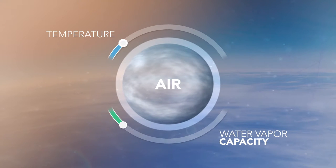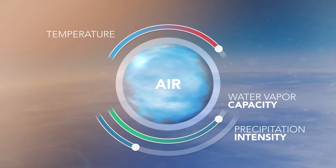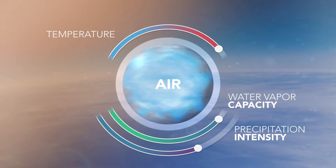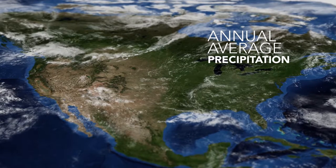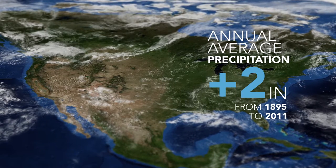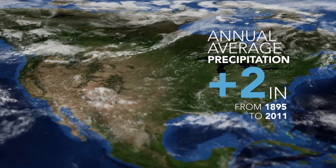In addition, warmer air can hold more water vapor. The result of higher water vapor concentrations is the increased intensity of precipitation. During heavy precipitation events, much of the water runs off into the rivers and streams, leading to increased flooding. Annual average precipitation over the continental United States as a whole increased by close to two inches between 1895 and 2011. The number and intensity of heavy precipitation events have increased significantly and are projected to increase in all regions of the United States.